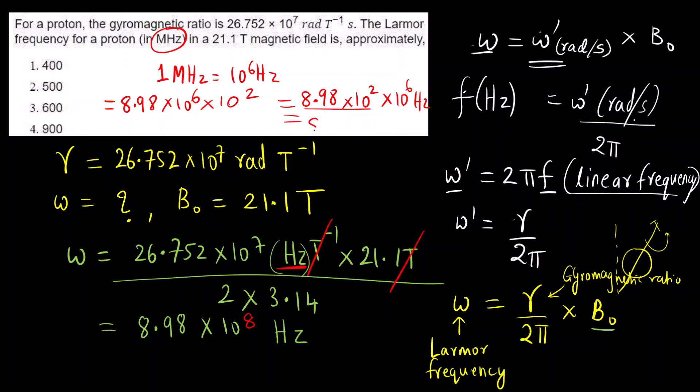You multiply this by 100, we will get 8.98 and 10 raised to 6 Hertz is 1 megahertz. So this is the final answer: 8.98 you can round off to 900, 900 megahertz. So what is the correct answer? The correct answer is option 4.